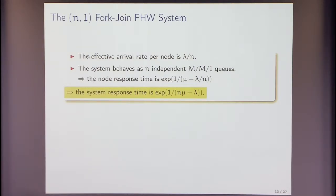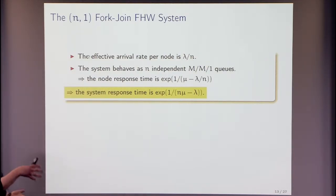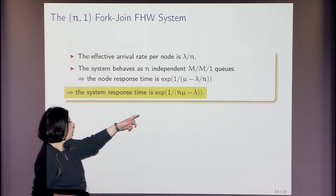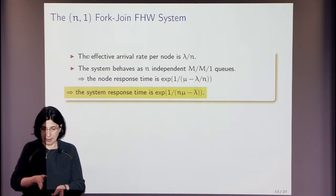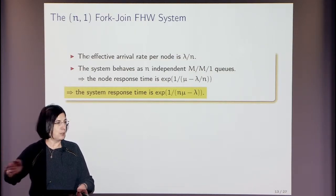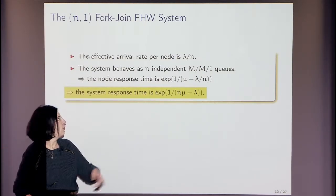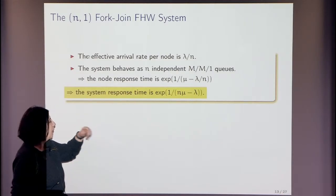For the N-1 fork-join queue — where you fork into N but only need 1 — this is actually easy to analyze. It boils down to a single queue with service rate N*mu. You can also view it through thinning: your arrival rate falls via a Poisson splitter.